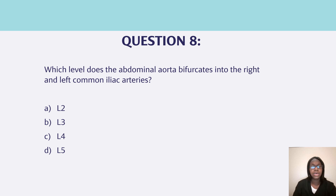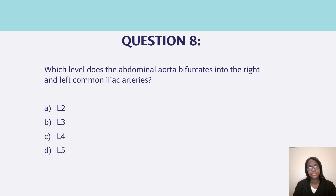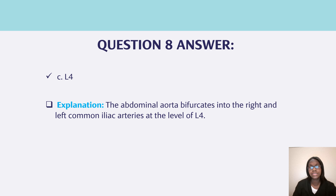Question eight, at which level does the abdominal aorta bifurcate into the right and left common iliac arteries? Is it L2, L3, L4, or L5? The abdominal aorta bifurcates into the right and left common iliac arteries at the level of L4. It's very important to know your anatomy of your arteries — where it bifurcates and which area it meets at.